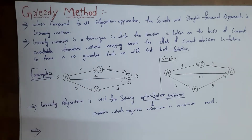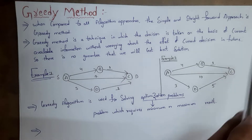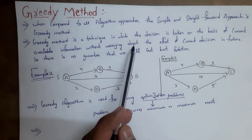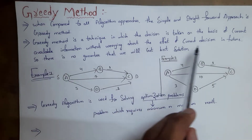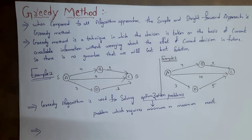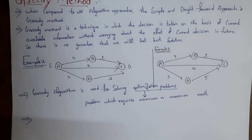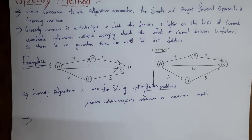Greedy method is a technique in which a decision is taken on the basis of current available information without worrying about the effect of the current decision in the future. This greedy method will take a decision based on the current available information and it does not worry about the future.